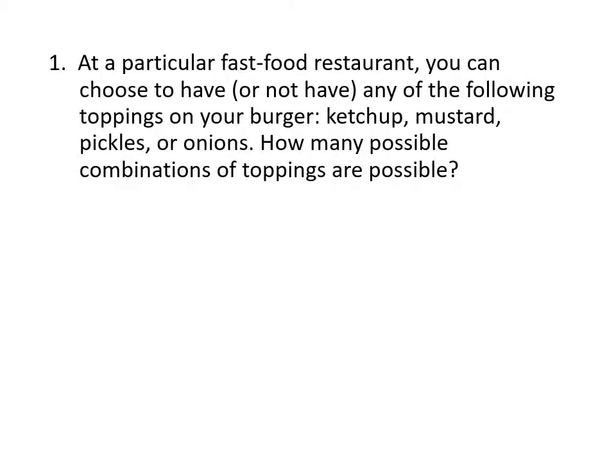In this first example, we've got a fast food restaurant and we can have one or any or all of these toppings on our burger. We could have ketchup or not, mustard or not, pickles or not, and onions or not. We're trying to figure out a way to organize this problem so we can figure out how many possible combinations of toppings are possible.